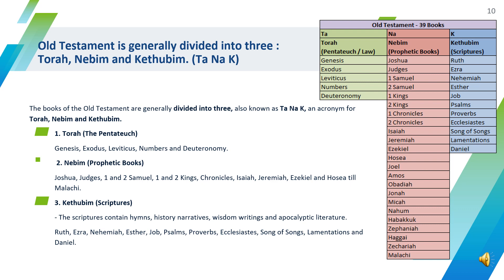The second category is the Nabi'm, or prophetic books. It contains the books Joshua, Judges, 1 and 2 Samuel, 1 and 2 Kings, Chronicles, Isaiah, Jeremiah, Ezekiel, and Hosea till Malachi. The last category is the Kethubim, or scriptures, which contain hymns, historical narratives, wisdom writings, and apocalyptic literature.